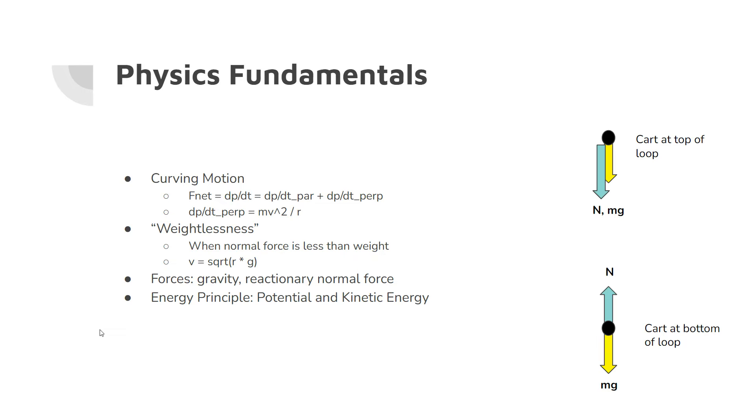Where at the top of the loop, gravitational potential energy is quite large and kinetic energy is actually lower. But as the cart travels down from the top to the bottom of the loop, speed increases, and that potential energy gets transferred into that kinetic energy. And the cart starts to move faster and faster.